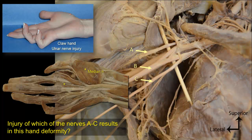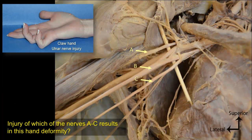Returning back to the dissection, it shows a view of the axilla, showing the axillary artery, cords, and branches of the brachial plexus. The pectoral muscles, pectoralis major and pectoralis minor, are reflected up. In order to identify the branches A, B, and C, let's try to find the capital M configuration of the medial and lateral cords of the brachial plexus and their terminal branches.